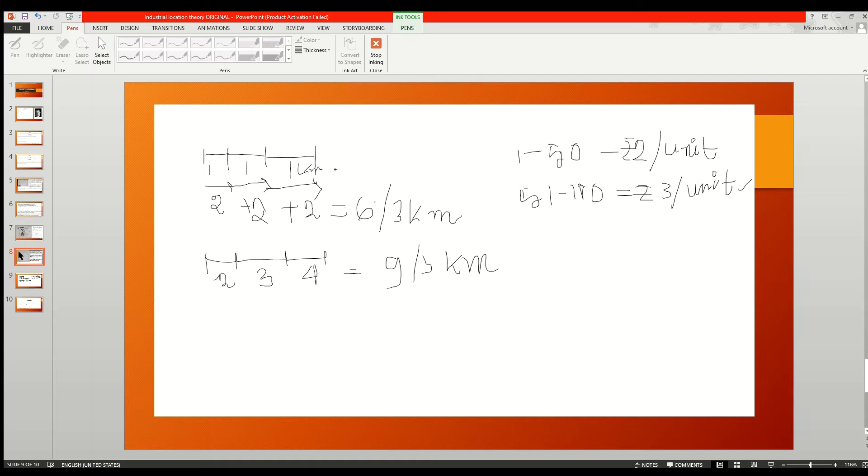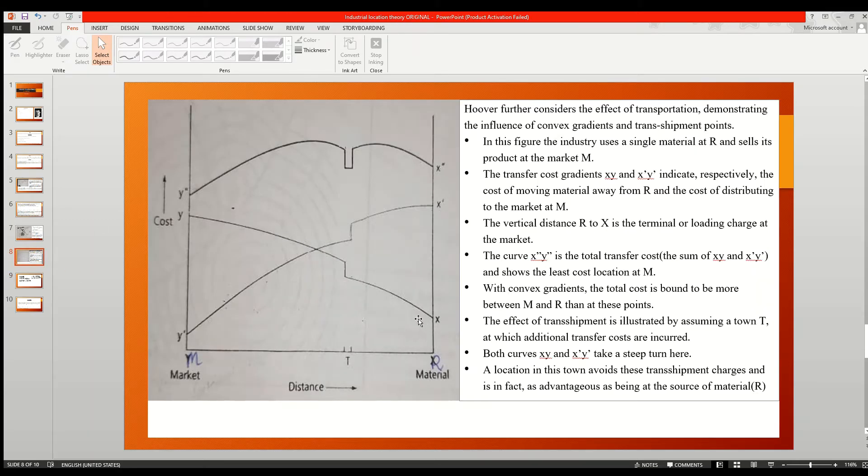Then the curve or the transport cost curve will look like something like this. Let us say the market is situated at M and the material is extracted at R.